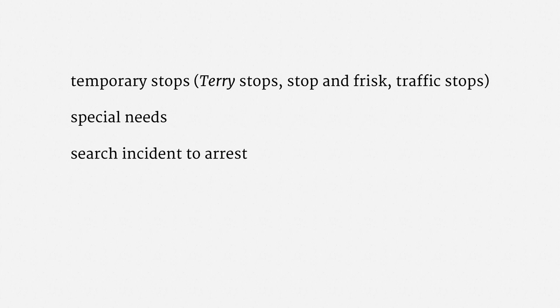Another category is the so-called special needs branch of the Fourth Amendment. It originally applied to administrative searches and seizures, such as inspecting a business's records, but it has greatly expanded over the years. We're going to return to the special needs branch when discussing foreign intelligence. The search incident to arrest exception allows a warrantless search of an arrestee's possessions, in theory to protect officer safety and prevent destruction of evidence. Until 2014, many courts held that this exception allowed police to search electronic devices. In the recent Riley case, the Supreme Court held 9-0 that the exception does not apply to electronics. The last exception I want to touch on is plain view — it allows police to seize contraband when it's visible from a place they're allowed to be. Plain view has been quite difficult to apply in searches of computers, and we'll look at that soon.